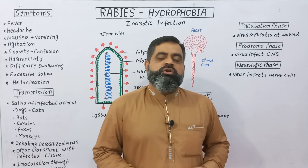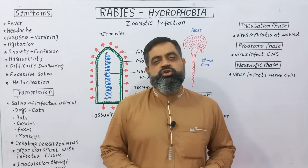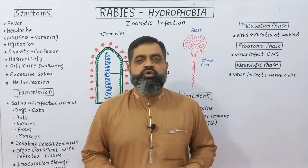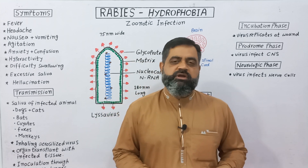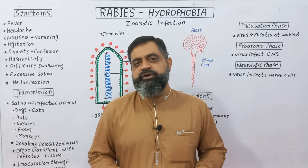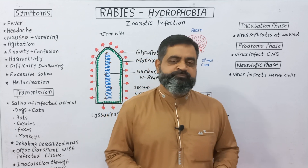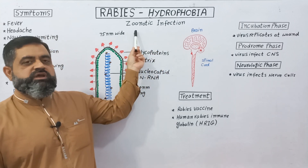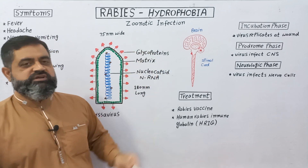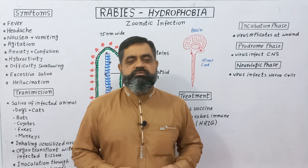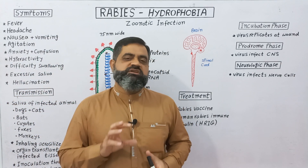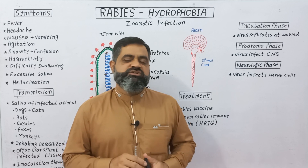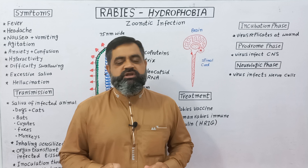Hello to all students. In this video lecture we are going to discuss a disease known as rabies, also known as hydrophobia or aquaphobia. Rabies or hydrophobia is a zoonotic infection. Zoonotic means such an infection which can spread through animals.